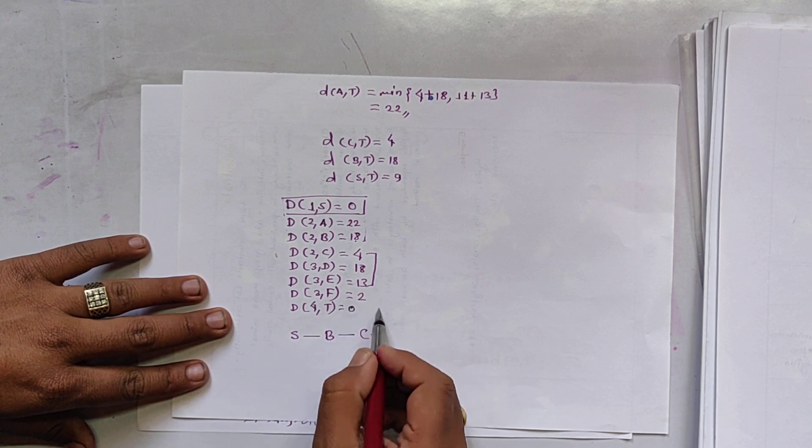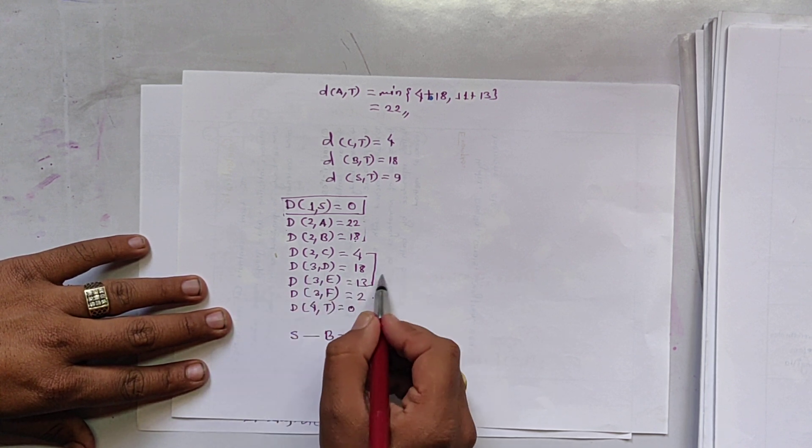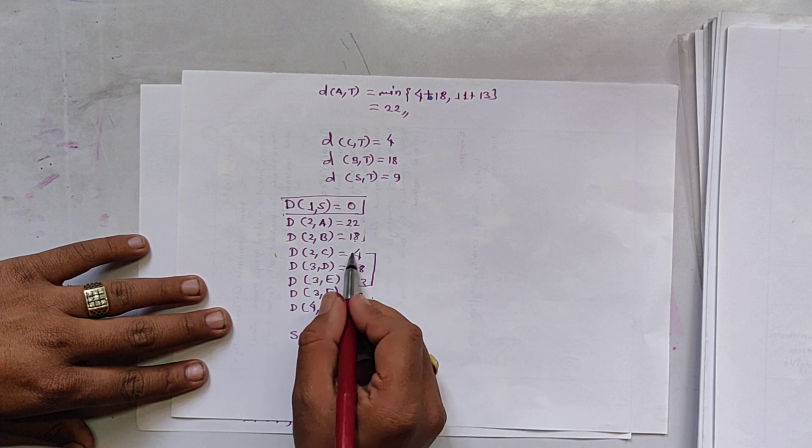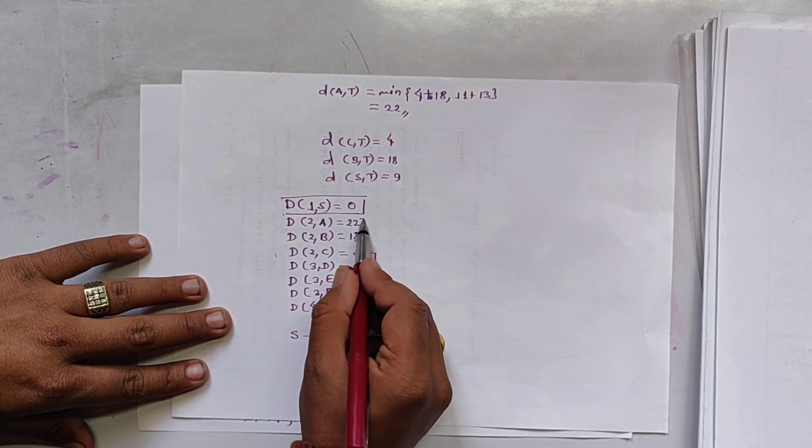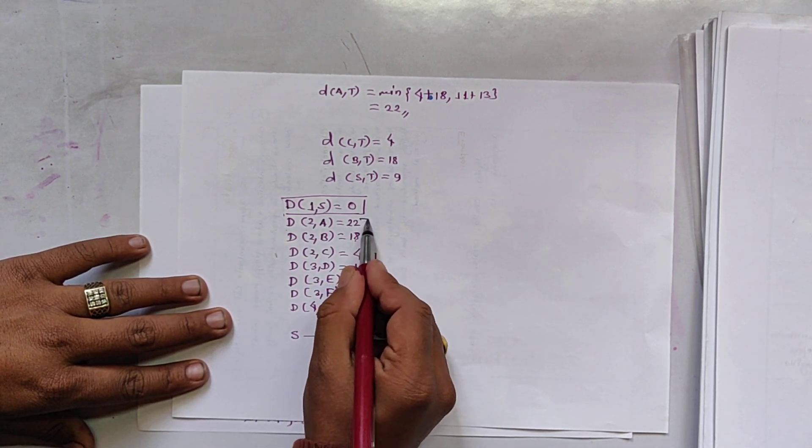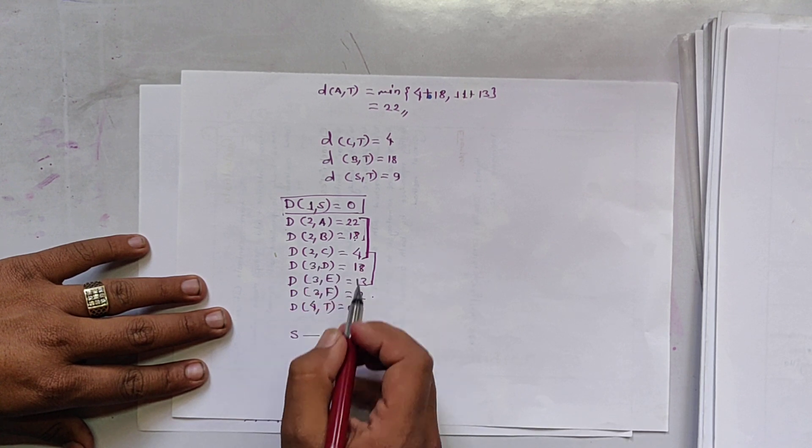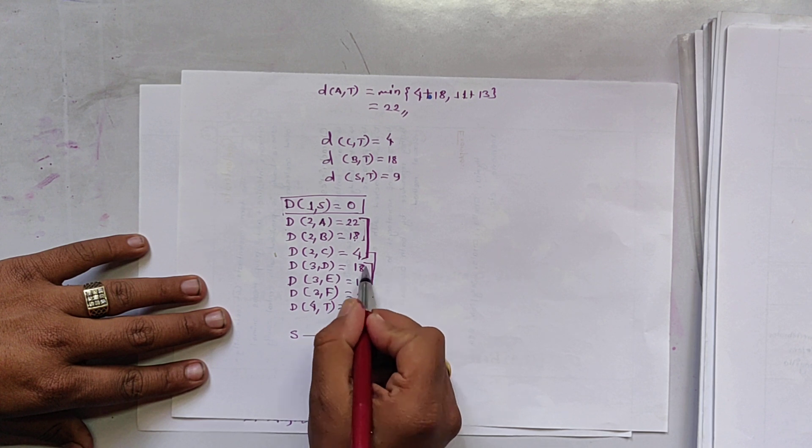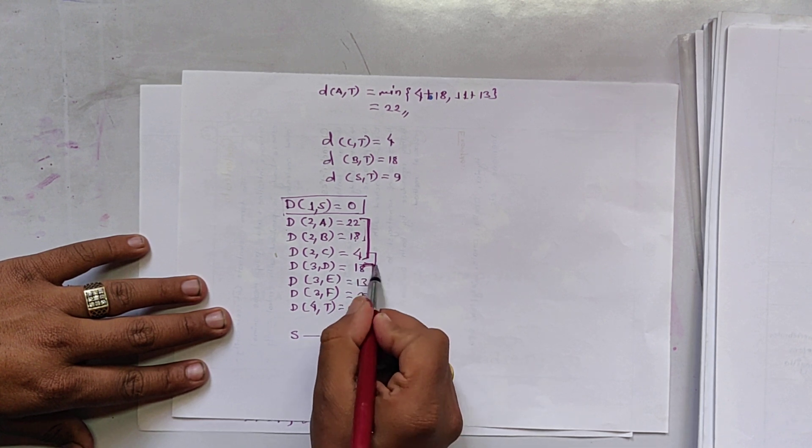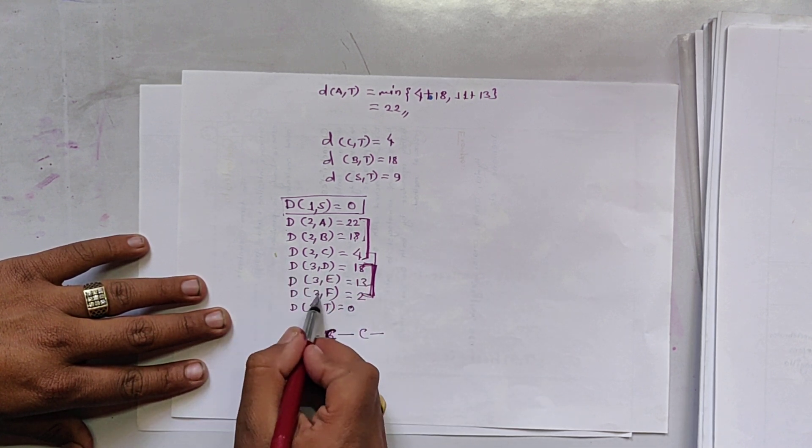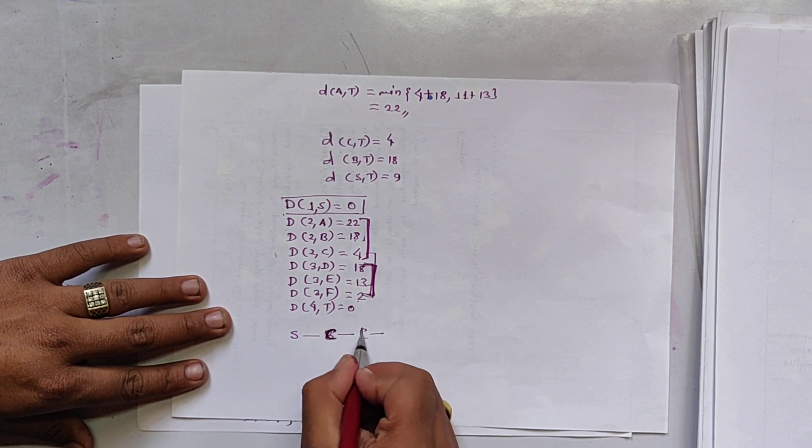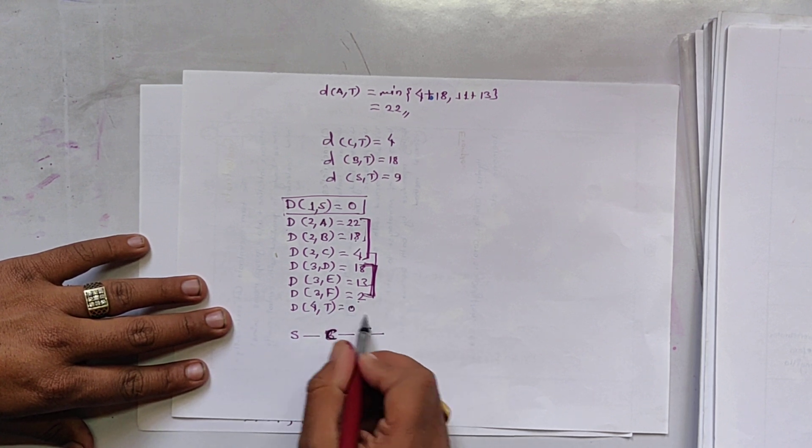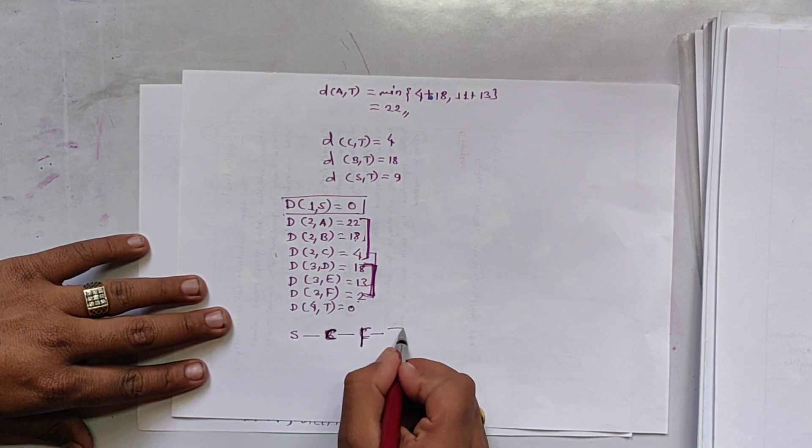Sorry. In second stage, there were 3 vertices, not 2. So we select C, not B. In third stage, there are 3 vertices. These are the vertices. So we select F because 2 is the minimum. And in fourth stage, there is T only. So T.